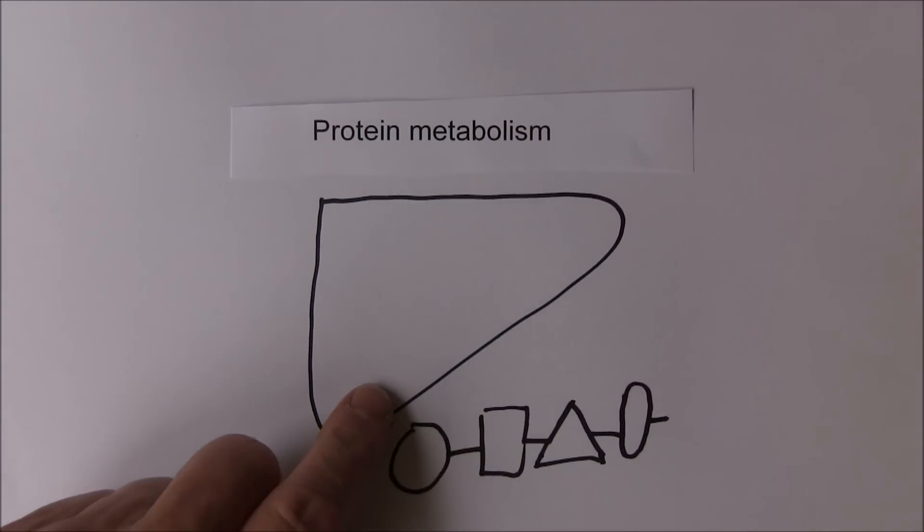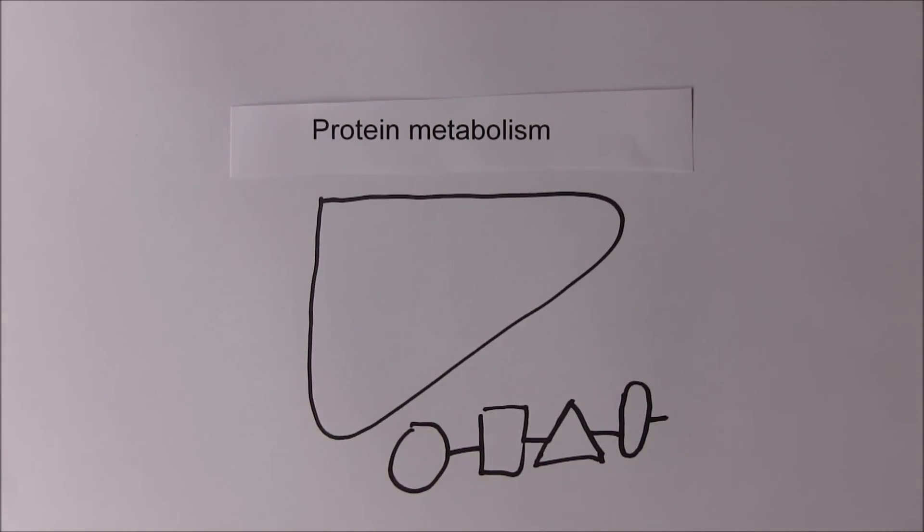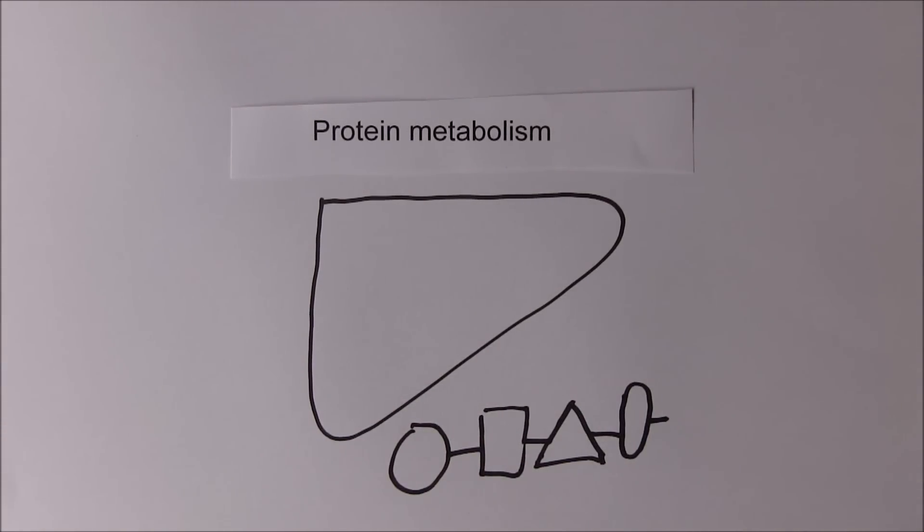If more proteins are consumed than are required, the excess amino acids are utilized for their energy-yielding content. But before the proteins can be used to produce carbohydrate or fat, they must first be chemically broken down. This process is called deamination. Deamination is the breaking down of amino acids into things that can be used as substrates for fuels, like carbohydrates and fats.